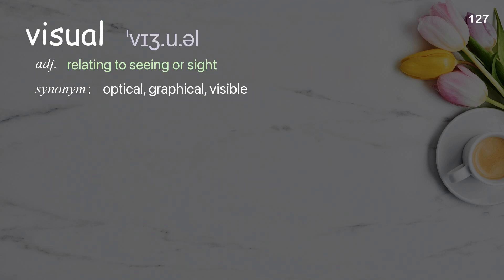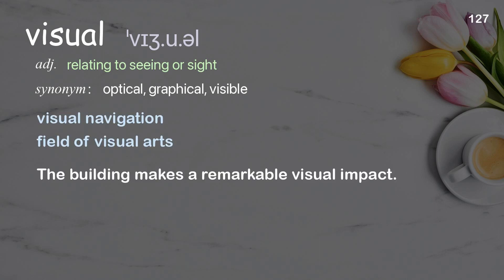Visual: relating to seeing or sight. Examples: visual navigation, field of visual arts. The building makes a remarkable visual impact.